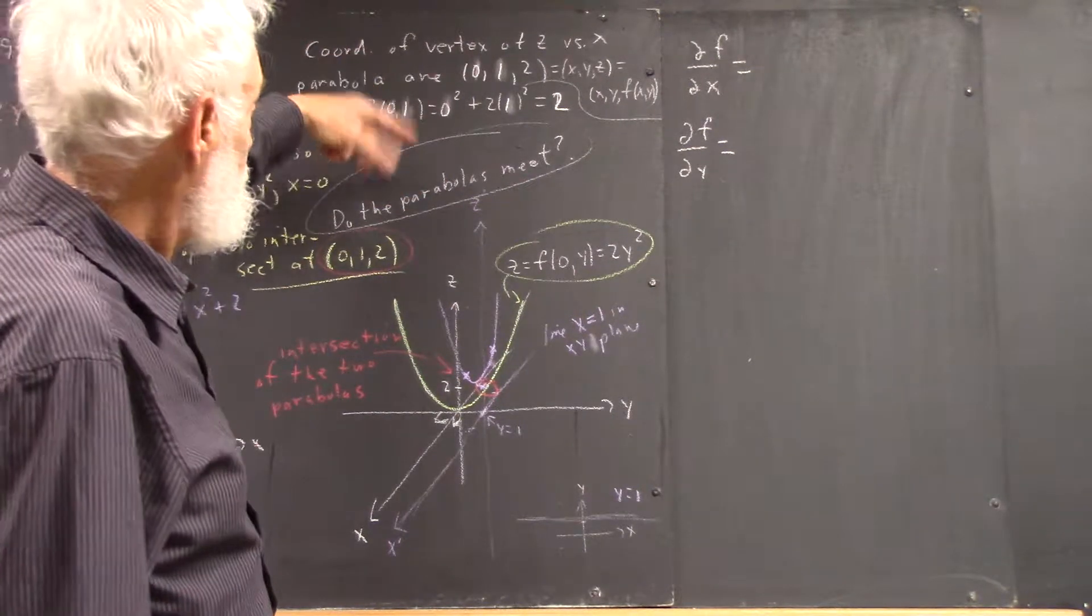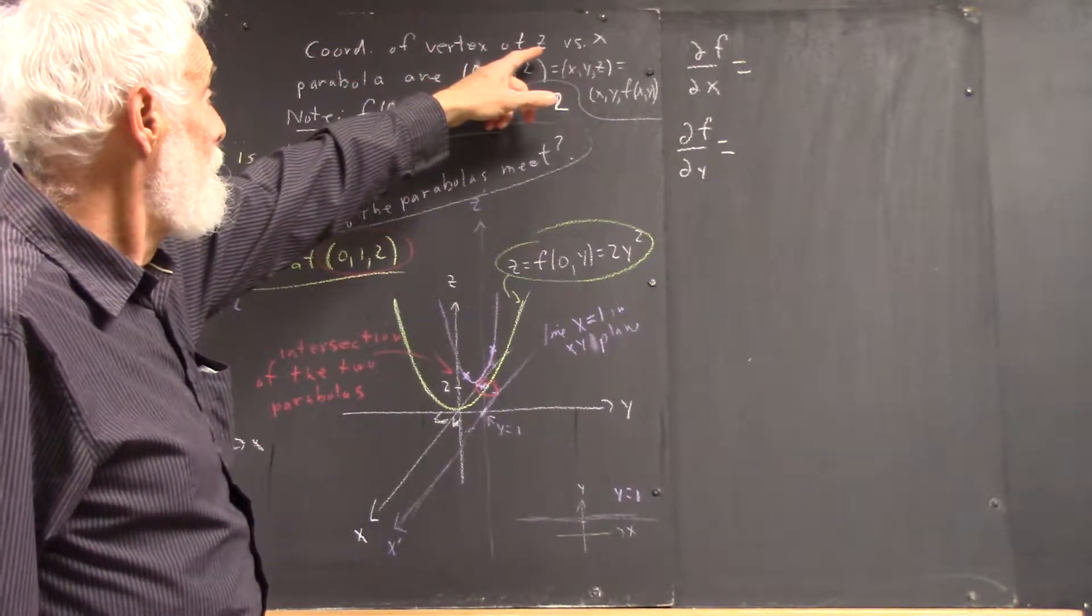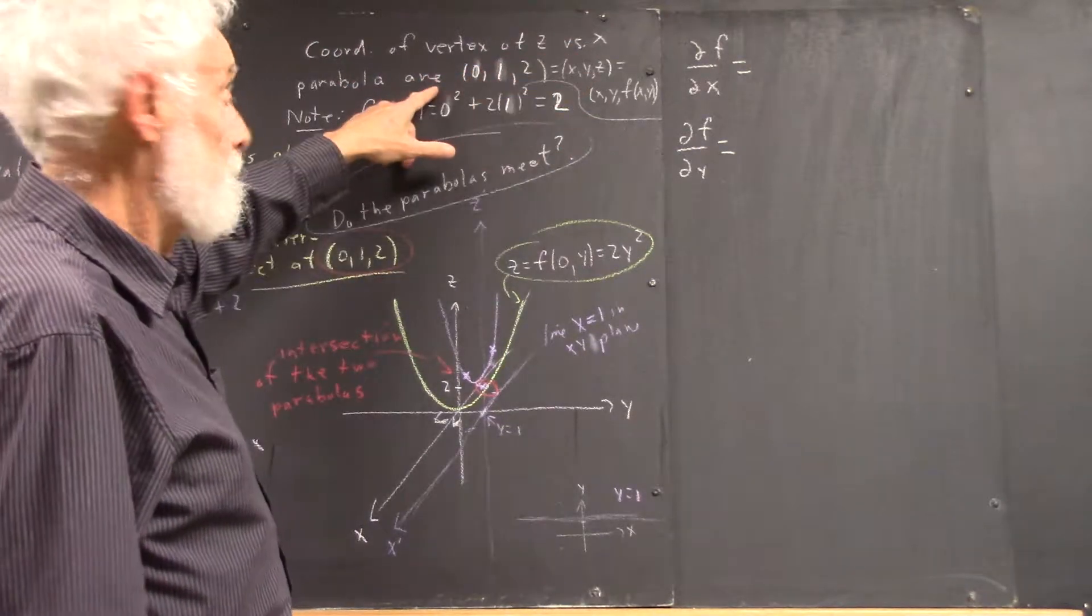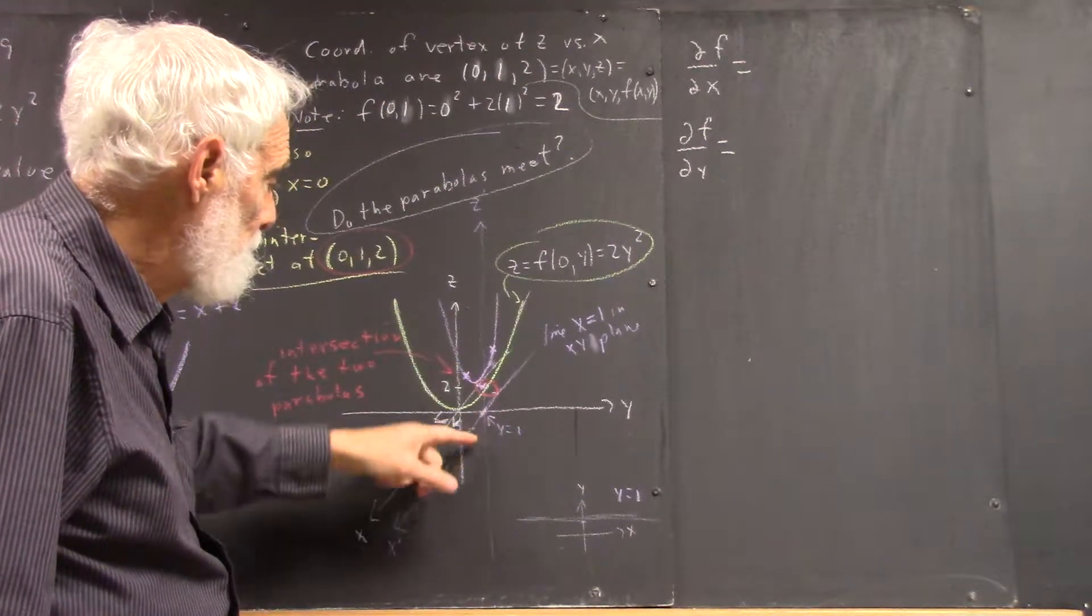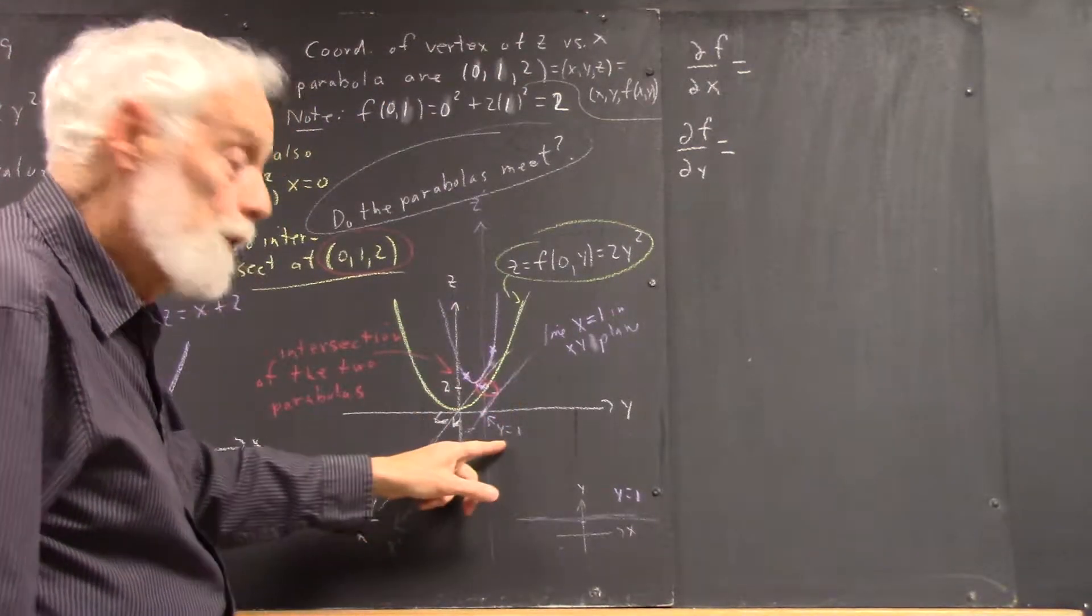In three dimensions, the coordinates of the vertex of the Z versus X parabola are 0, 1, and 2, because here it is, it's above the line where Y equals 1.